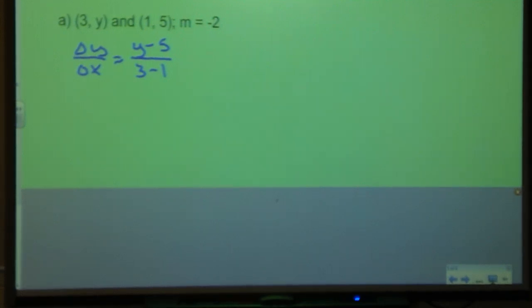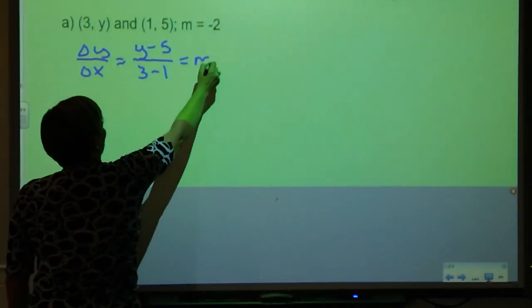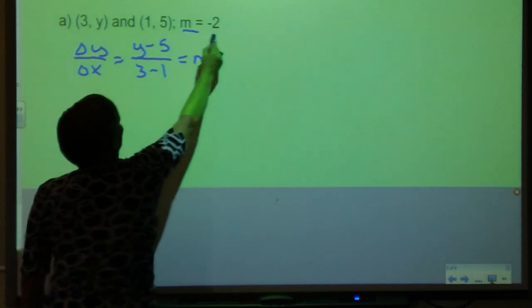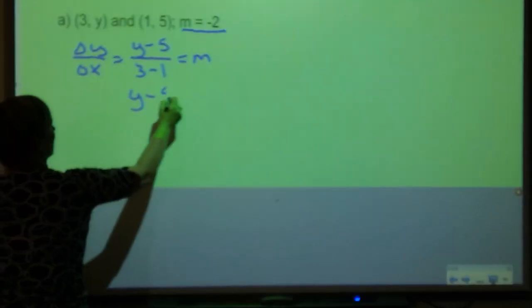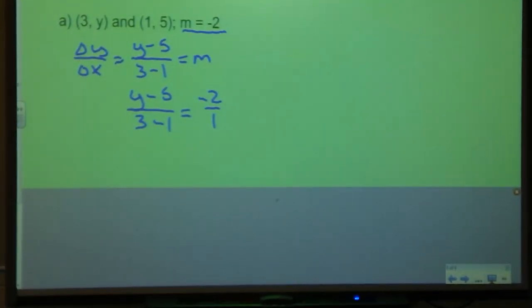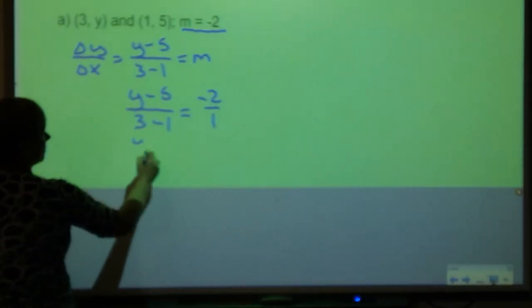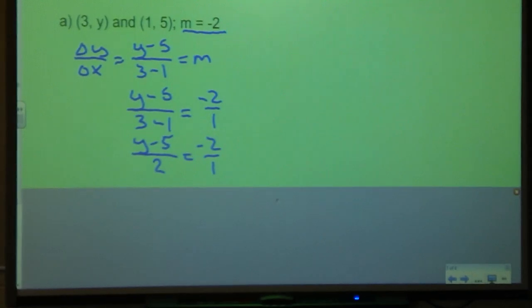It is okay to do y minus 5, but then when you're solving you'll have to deal with the negative. And we've talked about before that could cause problems, that could cause mistakes in your work. That is my change in y over my change in x, which is my slope. So this is equal to m. But I know m is equal to -2, so I can replace that m with -2 over 1. Now I have a proportion that I can solve. I'll simplify 3 minus 1, and then cross multiply.